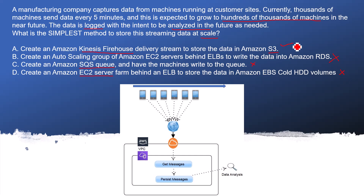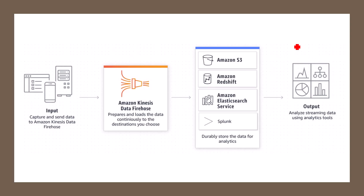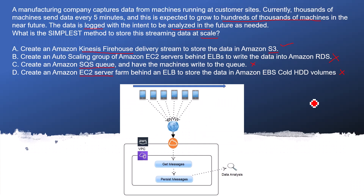We will read more about Kinesis Firehose in the next slide. The proper use case is that you have multiple devices on the client side directly sending data to Amazon Kinesis Data Firehose, which interacts with the data continuously and saves it to S3, Redshift, Elasticsearch, or Splunk. These are the four services provided by AWS where data can be directly saved, and after that the output can be analyzed using analytics tools. This exactly fits the criteria — we get the message, persist it to S3, and analyze it later.